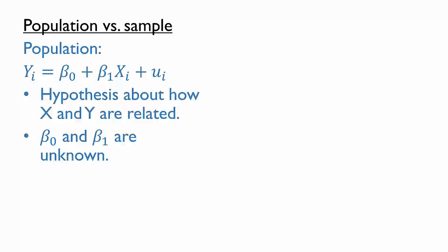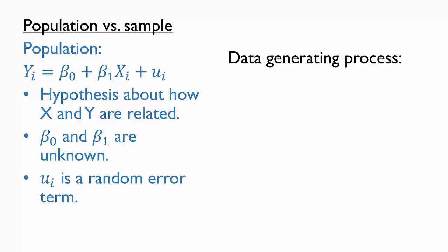Similarly, we do not know the error terms u, which are drawn from a random distribution. The population relationship is sometimes called a data generating process because it says how we think values of y are generated from x.